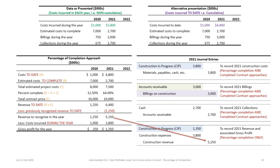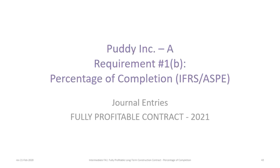The final journal entry records revenues, expenses, and gross profit: debit Construction in Progress $1,350,000 (gross profit), debit Construction Expense $3.8 million, and credit Construction Revenue $5.15 million. You don't have to sequence the entry exactly this way — revenue first, then expenses, works equally well. As long as the journal entry is correct, you'll be fine. We now post these to T-accounts to see the 2021 income statement and balance sheet impacts.